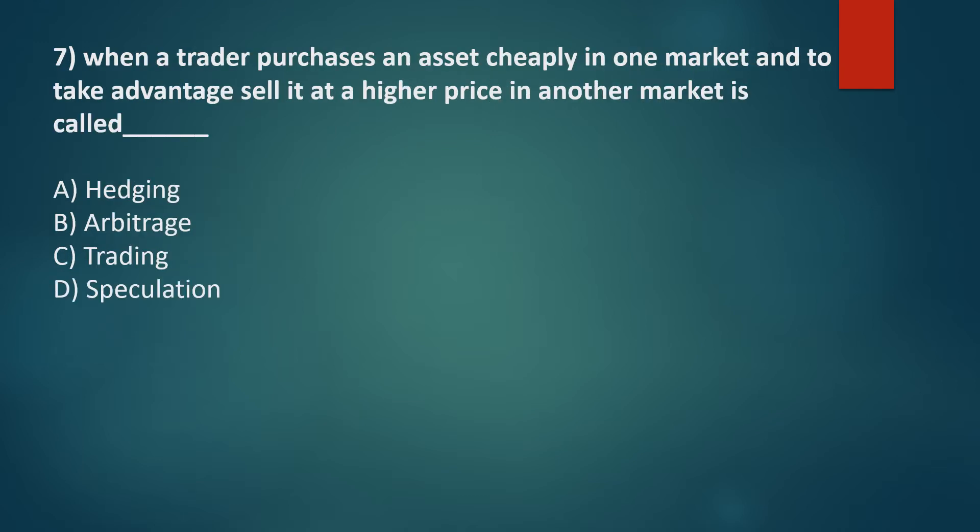When a trader purchases an asset cheaply in one market and, to take advantage, sells it at a higher price in another market, it is called — Option A: Hedging, Option B: Arbitrage, Option C: Trading, Option D: Speculation. The correct answer is Option B: Arbitrage.